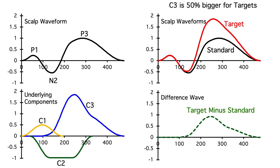So difference waves are a common way of isolating specific ERP components. They're not perfect, and you need to think about whether a given study has really isolated the component of interest. But they're very simple, easy to understand, and super helpful overall.